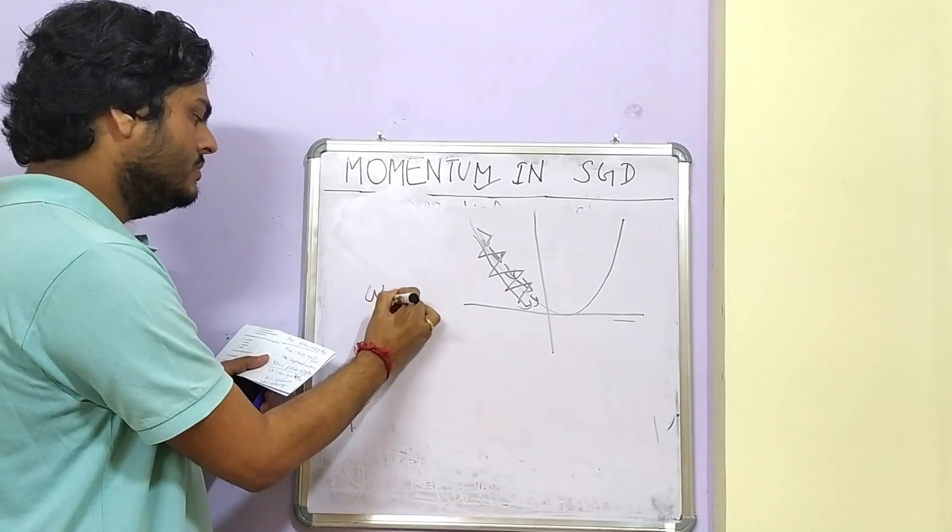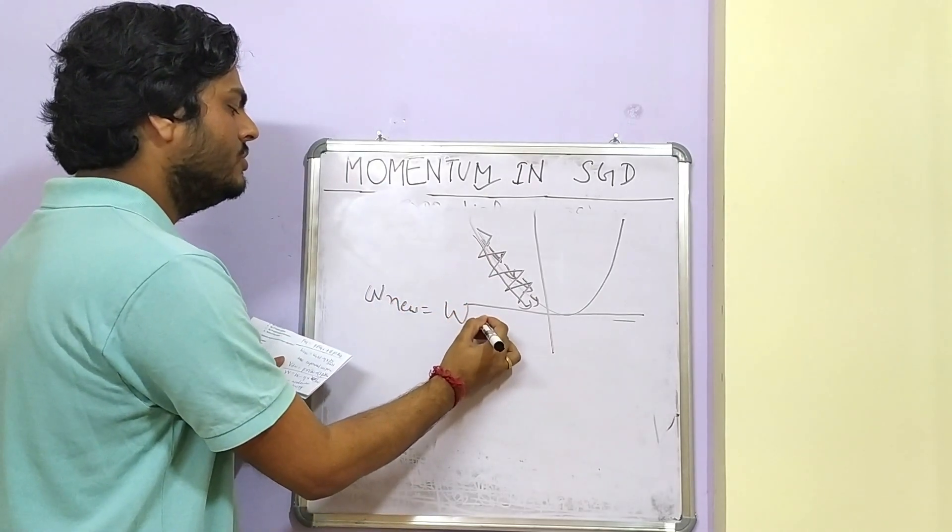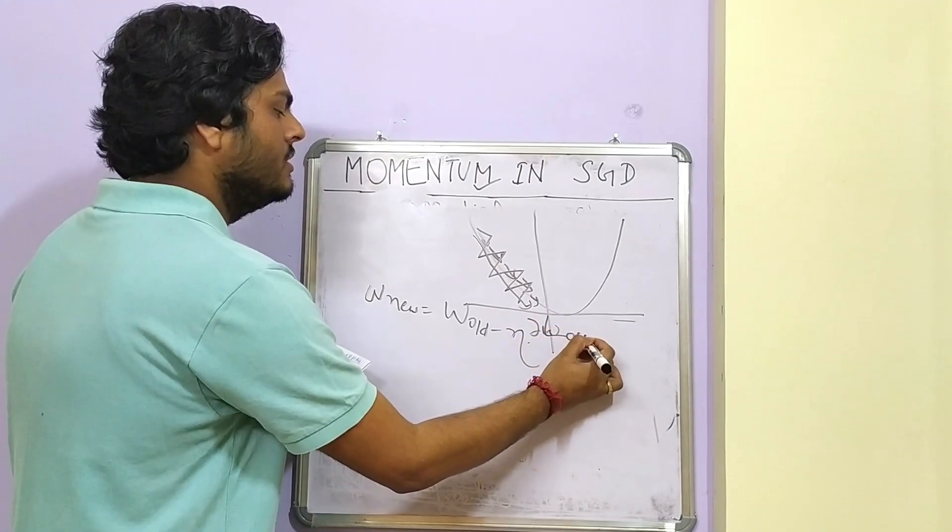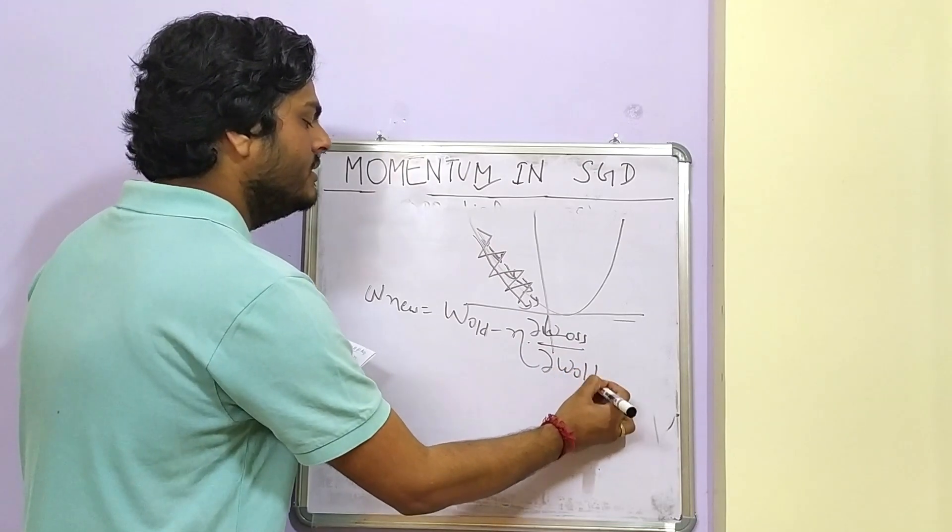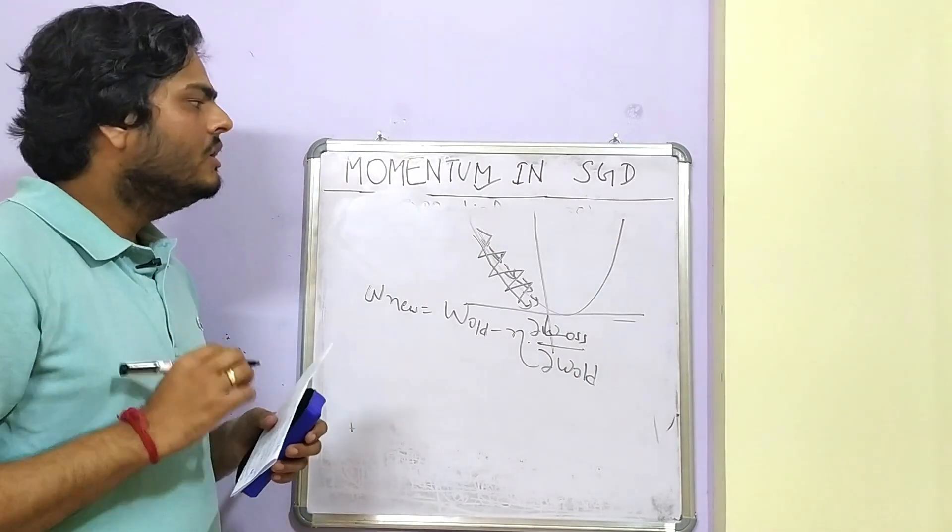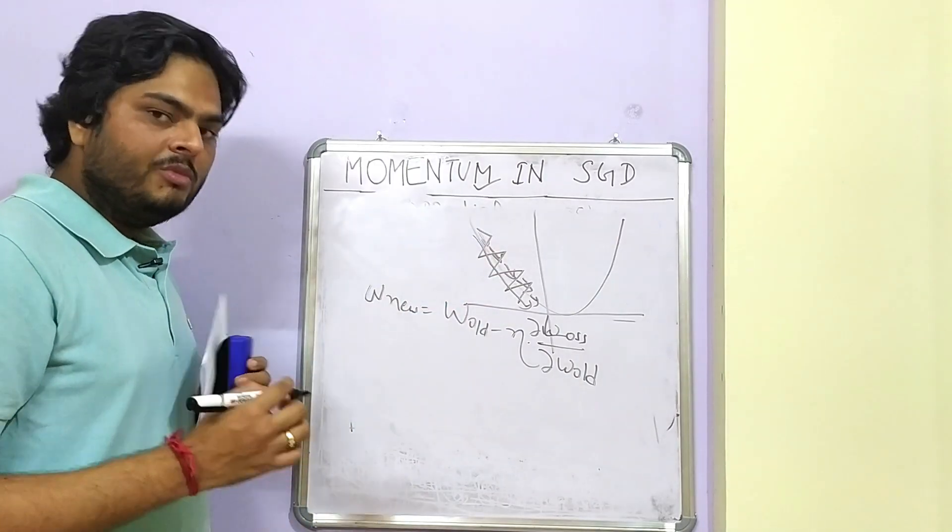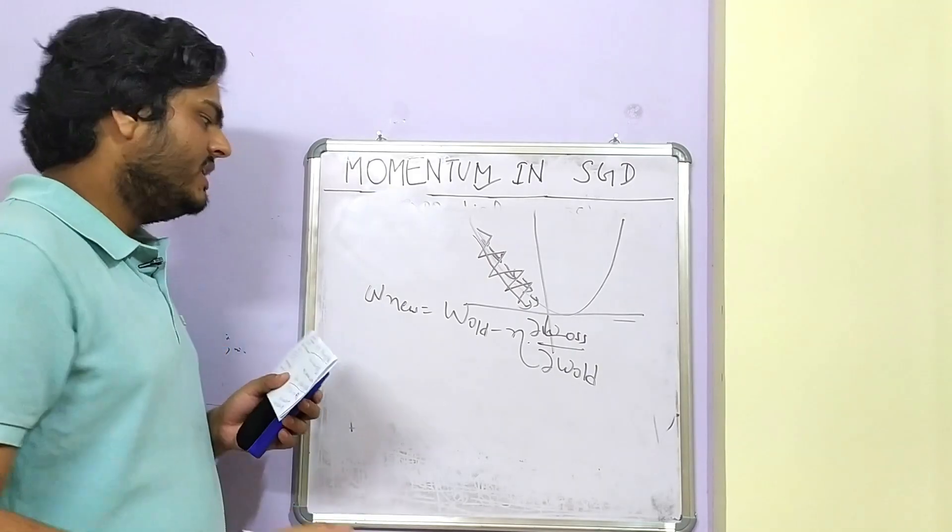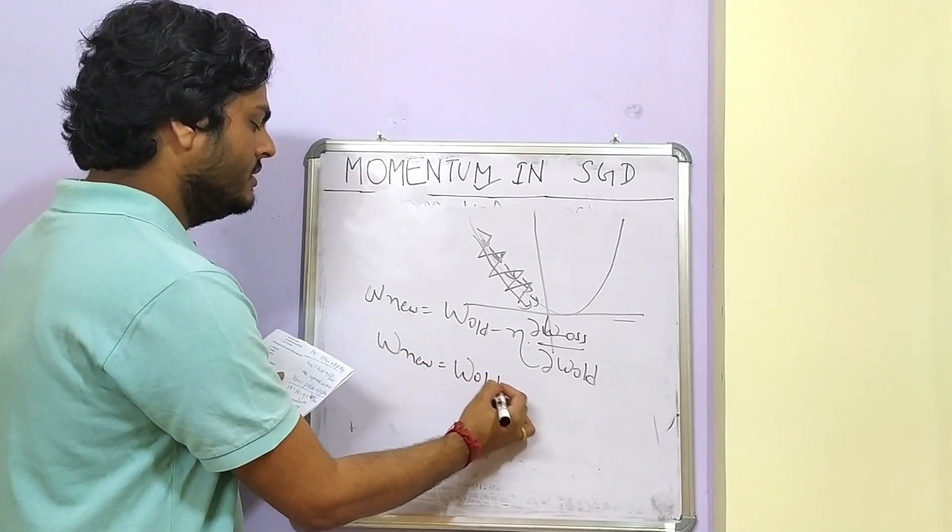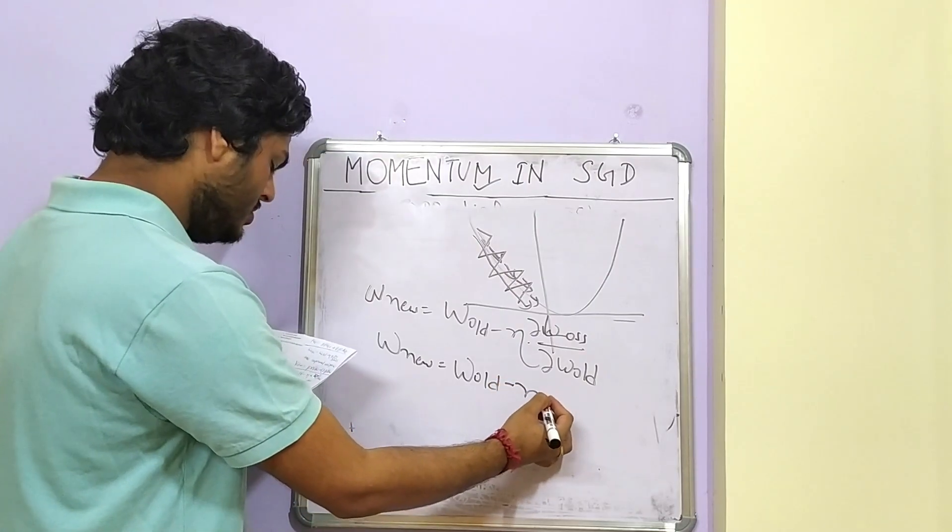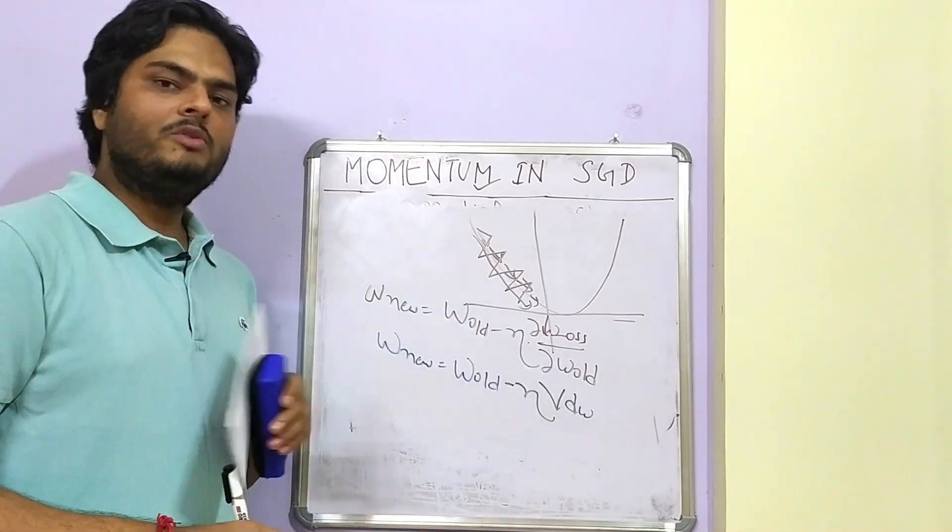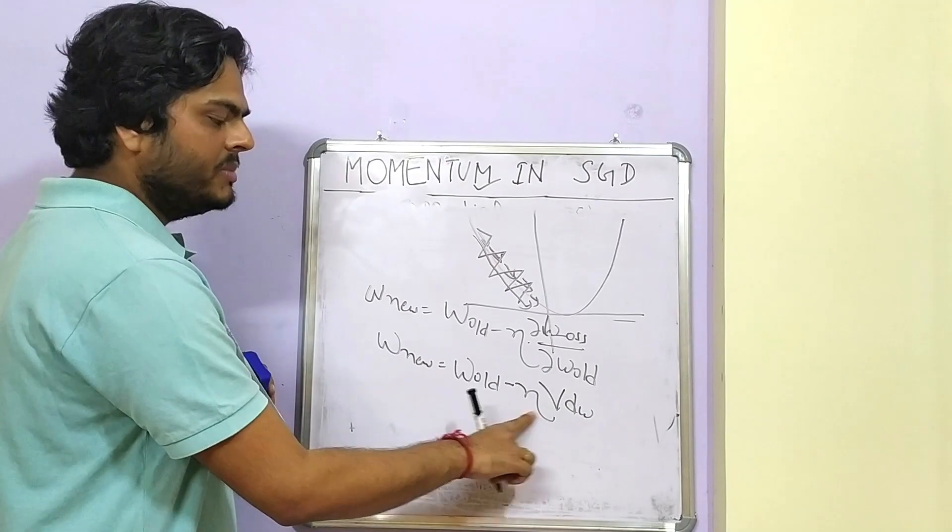How do we typically optimize our weight in neural network? We just say W_new is equal to W_old minus eta times derivative of loss with respect to W_old. This is how we typically optimize our weight in gradient descent.